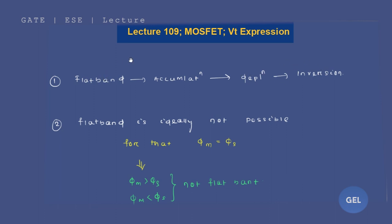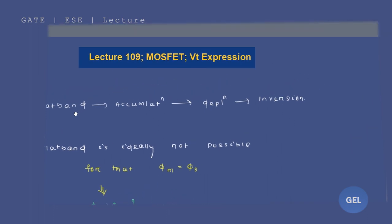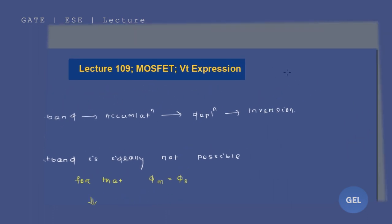Flat band, we achieve this by varying the gate voltage. So the formation of flat band - flat band means what we say? We say that this is the oxide layer on this side and this is your EV and this is your EFP. So this is your flat band condition.